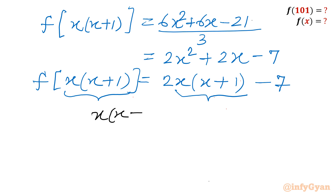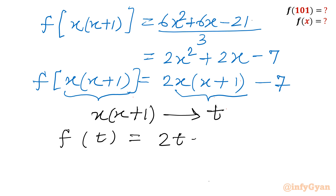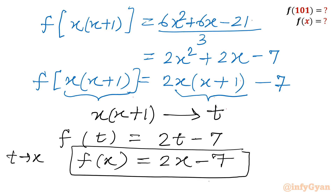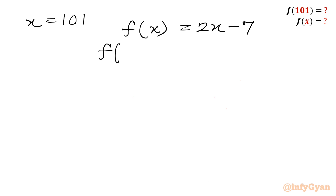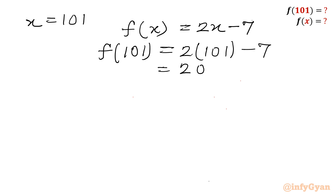So we have f(x)·(x+1) = 2x·(x+1) - 7. If I replace x·(x+1) with t, then f(t) = 2t - 7. Swapping t back to x gives f(x) = 2x - 7. We also need to find f(101): plugging in x = 101, f(101) = 2×101 - 7 = 202 - 7 = 195.